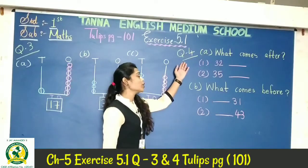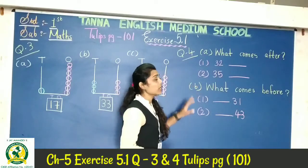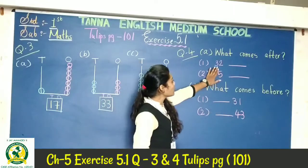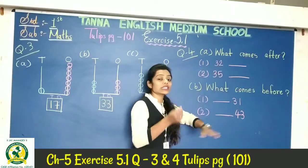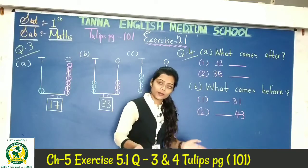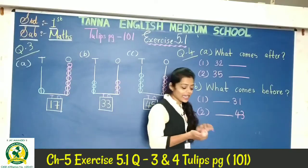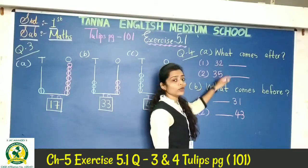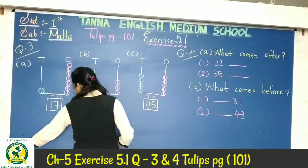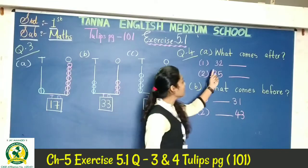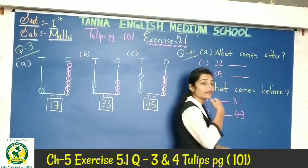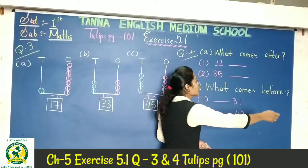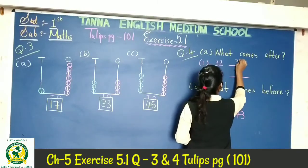Now our next question is question number 4. Here we have to write the after and before numbers of the given numbers. Here are some given numbers and we have to write the after numbers. So for the number 32: 31, 32, 33 — the after number is 33, so we write 33 here.